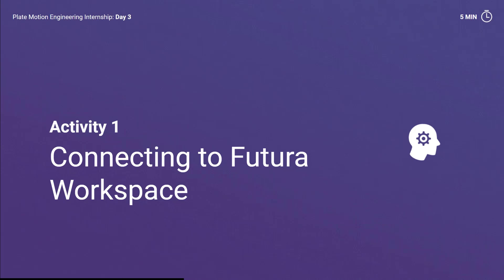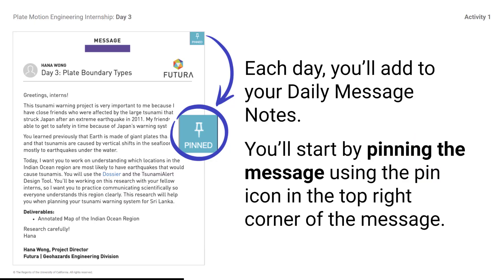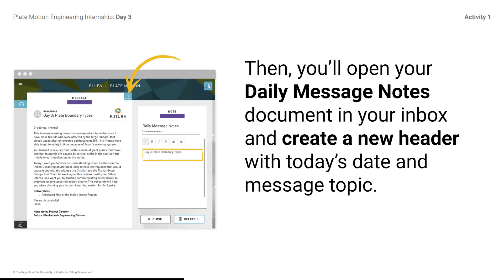Activity 1: Connecting to Futura Workspace. Each day, you will add to your daily message notes. You will start by pinning the message using the pin icon in the top right corner of the message. Then, you will open your daily message notes document in your inbox and create a new header with today's date and message topic.